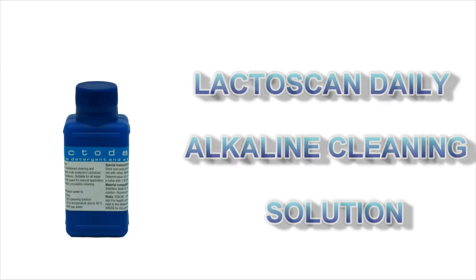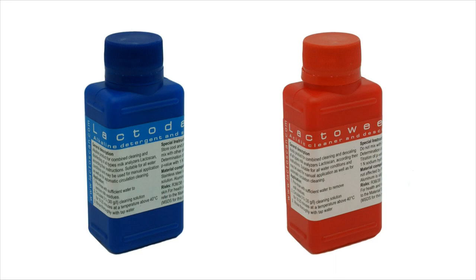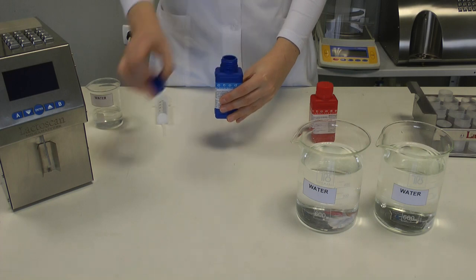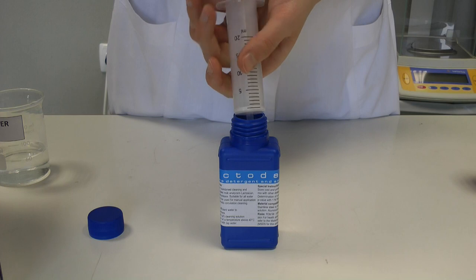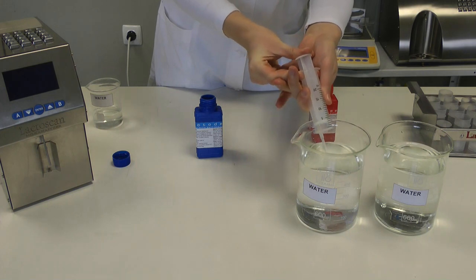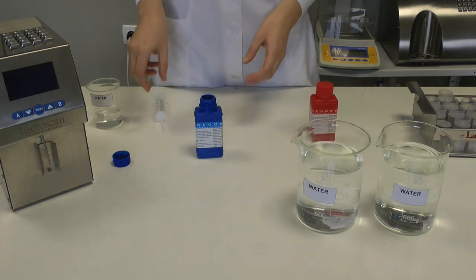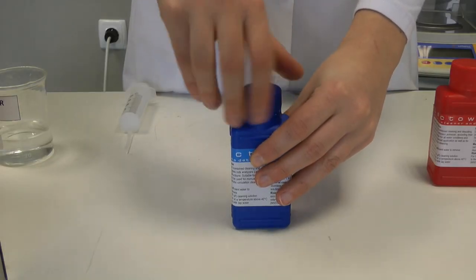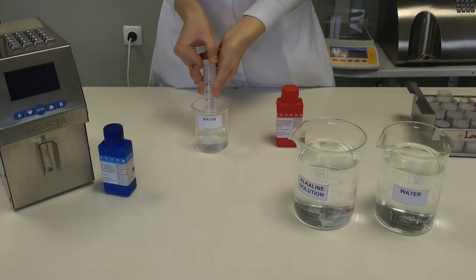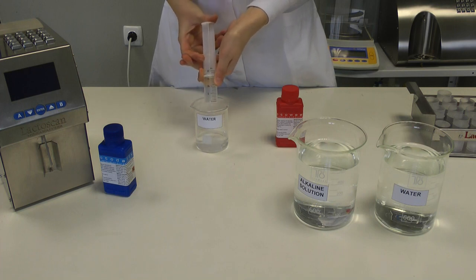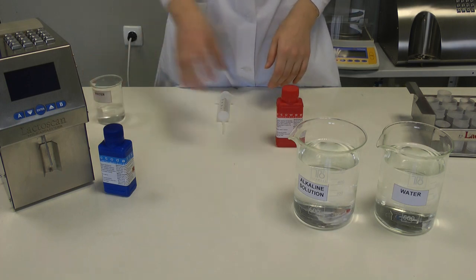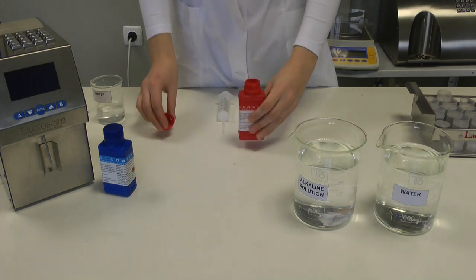We recommend usage of the chemicals supplied with the analyzer, alkaline and acidic, lactodaily and lacto-weekly. They may be ordered together with the analyzer. Preparation of the analyzer. Preparation of 3% working solution. Preparation of 7% working solution. Repeat the same with concentrated acidic solution.